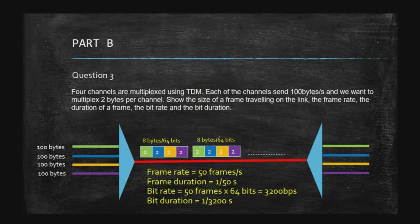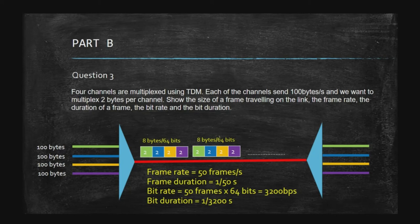For the normal part — if the question asks about characters, you need to assume that one character equals eight bits. For example, if the question asks about 100 characters, that means 100 × 8 = 800 bits.